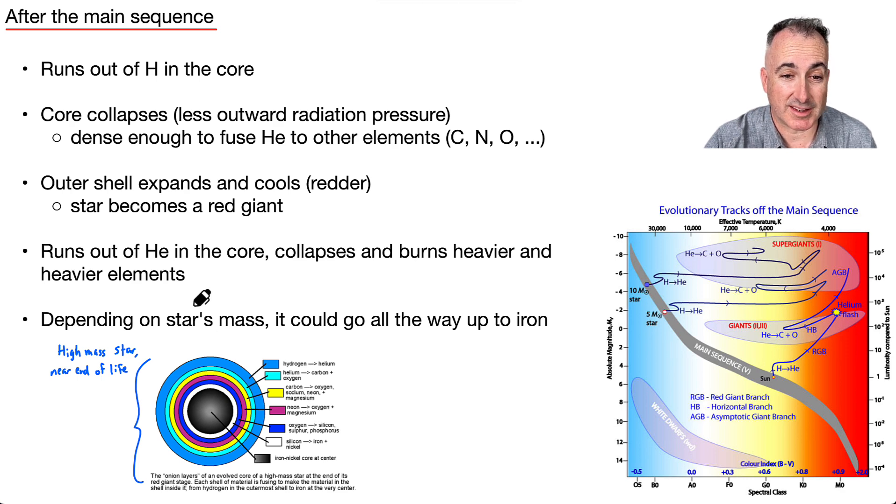But, so depending on a star's mass, it could go all the way up to iron. So here's an example of a really high mass star near the end of its life. So it's got lots of different shells. It's kind of like an onion with lots of different layers. And the center maybe has like iron and nickel. Well, it turns out the core, it can only go up to iron. It can't go any higher.